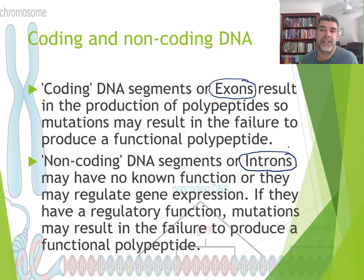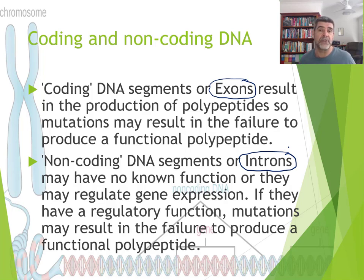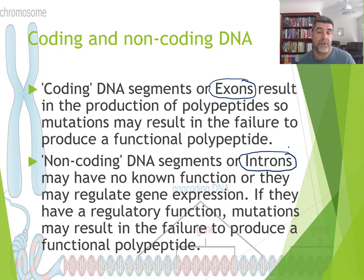The coding sections of DNA, or the exons, are the ones we've studied up to this point. They result in the production of polypeptides and ultimately proteins, so any mutation in these will result in the failure to produce a functional polypeptide. Things as simple as a single substitution of a nitrogenous base in a nucleotide can cause a protein to not function correctly, leading to certain diseases like cystic fibrosis, for example.